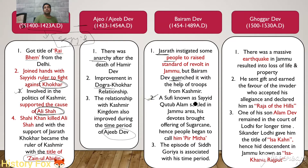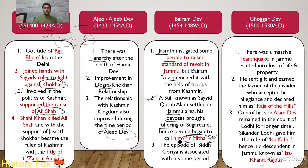Very importantly, a Sufi saint known as Sayyad Kutab Alam settled in the Jammu area during the time period of Bairam Dev. His devotees brought offerings of sugarcane to him, so this Sufi saint was popularly known as Peer Mitha — a place that still exists in Jammu today. The episode of Sidh Goriya is also associated with this time period, and many people of Jammu are followers of Sidh Goriya even today.